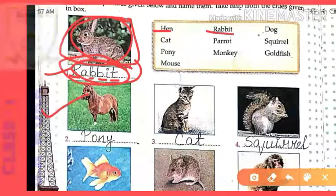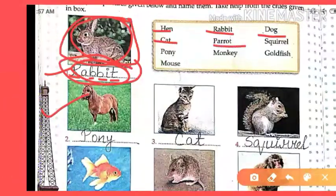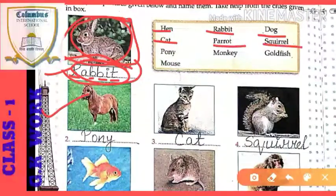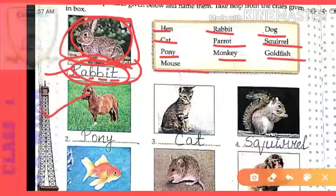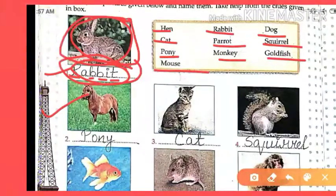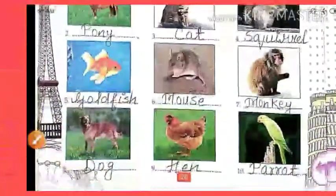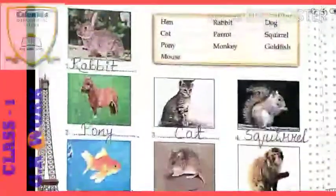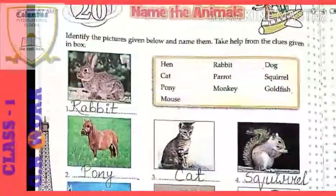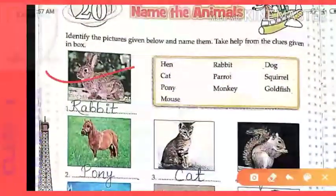First, let's see which animals' names are here: rabbit, dog, cat, parrot, squirrel, pony, monkey, goldfish, and mouse. Okay, so we've done the first one. Now let's move to the next.